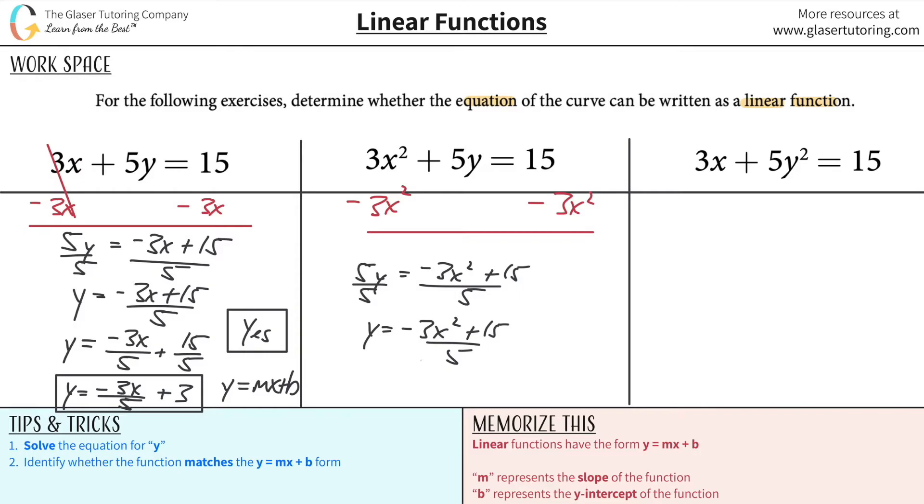If you want, we can distribute that 5 to each numerator term. You don't have to, but this is going to be negative 3 over 5 x squared plus 15 over 5, but that's really just plus 3. I'm going to combine that step. Now the question is, is this a linear function? Does this match up exactly to y equals mx plus b? You might say, well yeah, it kind of looks like that. Y is here, x is here.